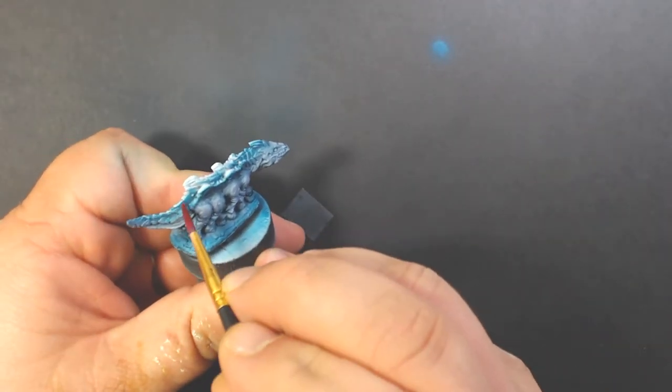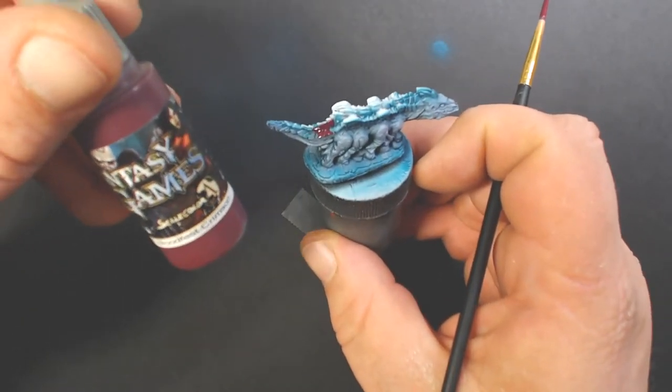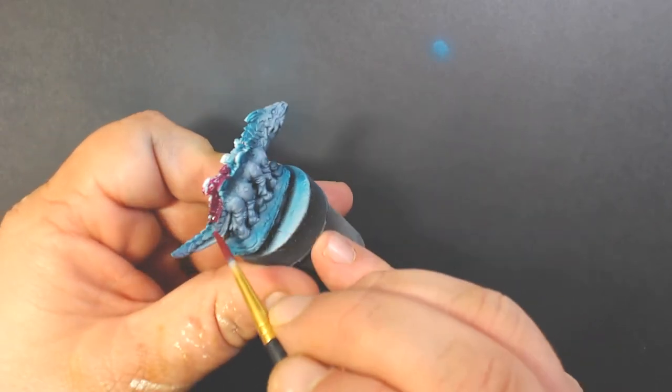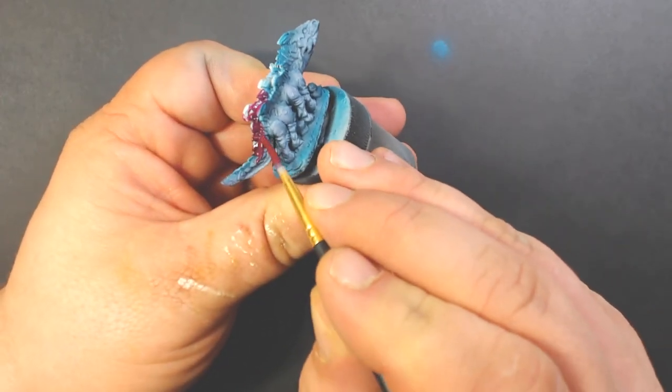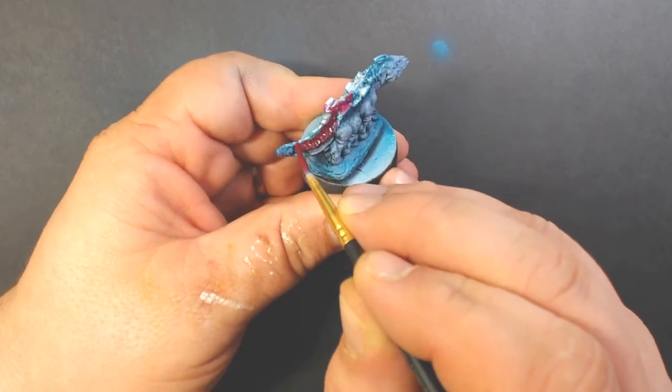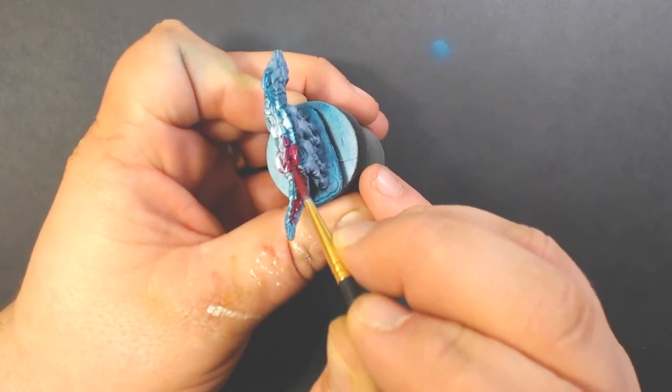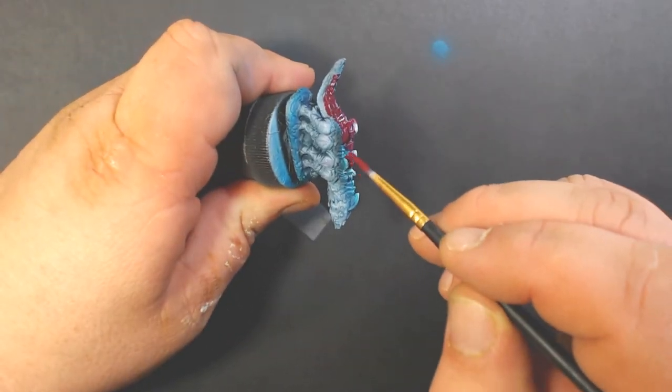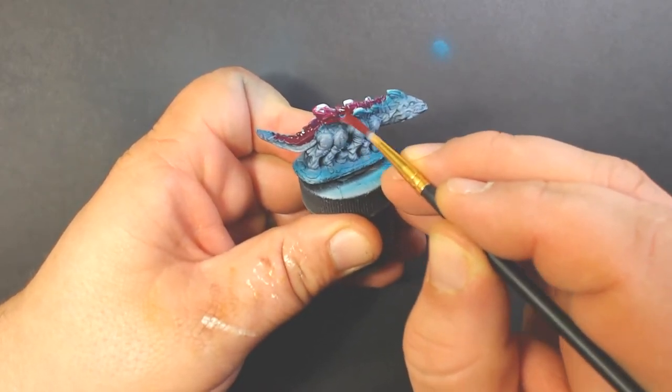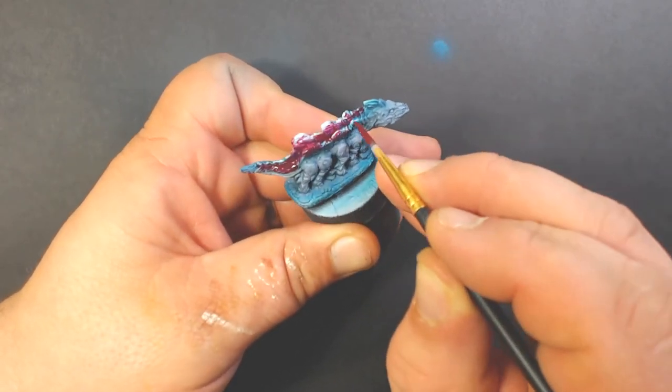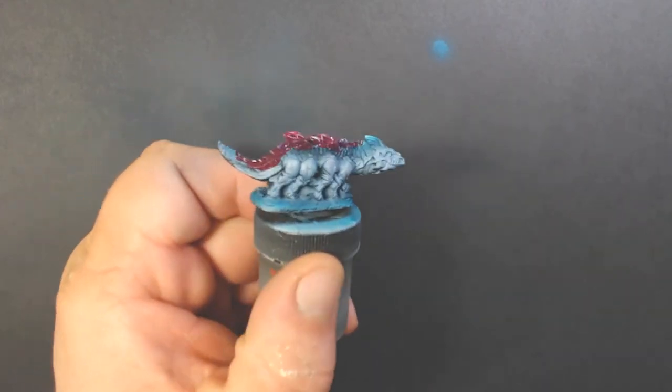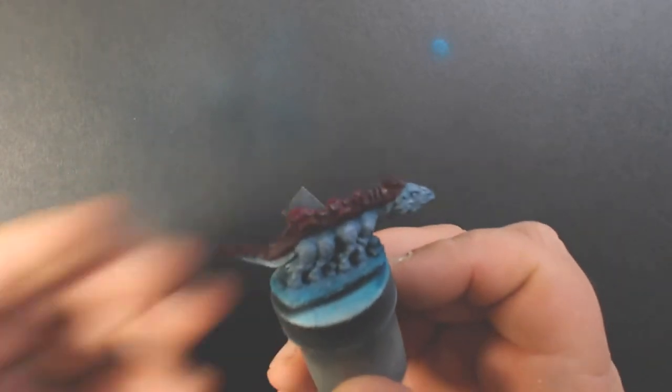Next up we're going to brush on some Scale 75 Blood Fest Crimson and we're just going to coat all of those scales on his back. This will definitely take two coats if you've thinned your paints properly. Here I've jumped ahead just to show you what it looks like when you should finish this step.